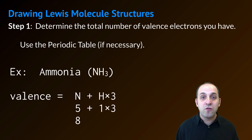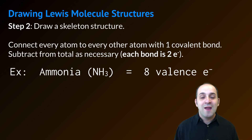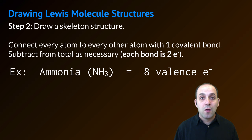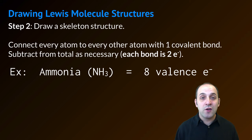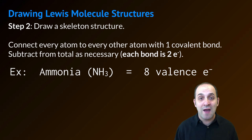Once I have that I can now start to represent the molecule as a structure. In step two, what you're going to do is draw a skeleton structure. A skeleton structure has every atom connected to every other atom with one covalent bond. After we make that skeleton structure we need to subtract the total number of valence electrons that we used when we made that structure from our total that we have available to draw the overall molecule.